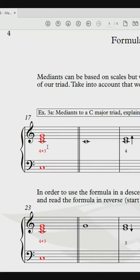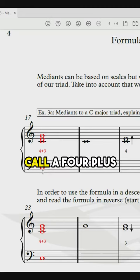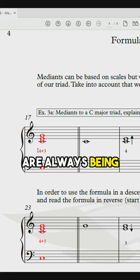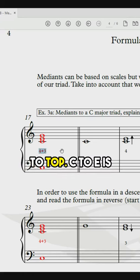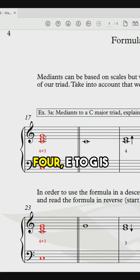I will explain. This is what we call a 4 plus 3. Remember that these formulas are always being built from bottom to top. C to E is 4, E to G is 3.